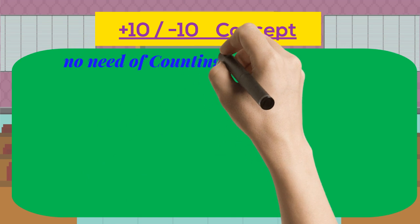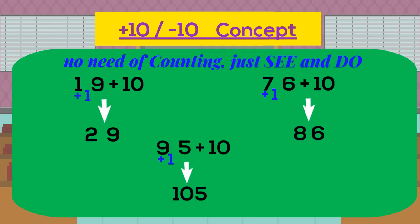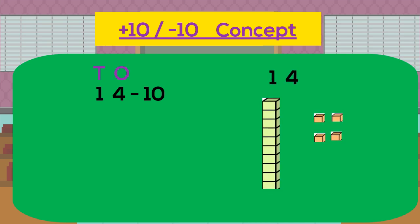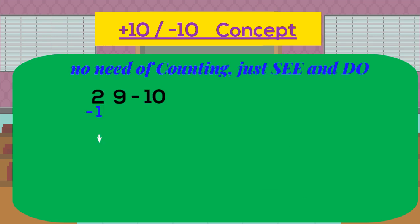No need for counting. So 19 plus 10 is 29, 76 plus 10 is 86, 95 plus 10 is 105, and so on. But if we have 14 minus 10, then one ten will go away and four ones will be left, which means four. So whenever a child sees any two-digit number minus 10, she has to subtract one from the tens place of the number.